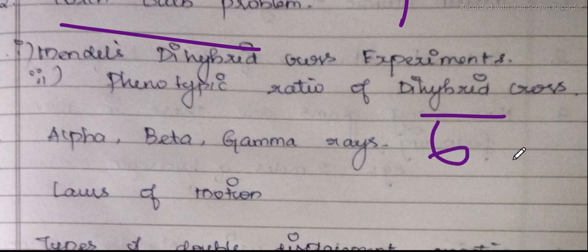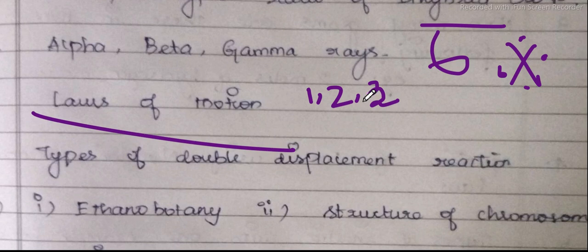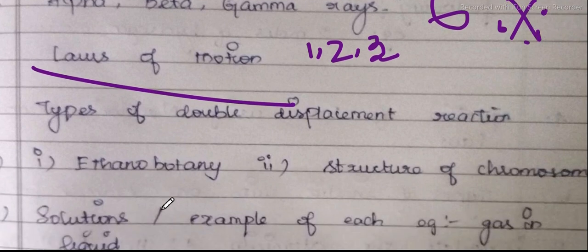In the sixth lesson, there is alpha, beta, gamma rays — that is also very important. Then there is Newton's laws of motion: first law, second law, third law. If you learn about Newton's second law, you will have a two-mark answer. If you understand the first law and second law combined, there will be four marks. Therefore it is manageable.